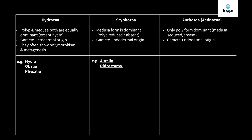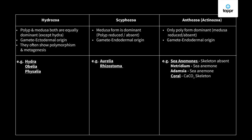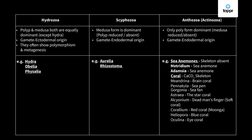Anthozoa has two types: sea anemones, where the skeleton is absent, and corals, which have a skeleton made of calcium carbonate. Under sea anemones we have metridium and adamsia. Under corals: meandrina (brain coral), pennatula (sea pen), gorgonia (sea fan), asteria (star coral), alcyoneum (dead man's finger), corallium (red coral — a precious gem that is a type of coelenterata), heliophora (blue coral), and oculina (eye coral).